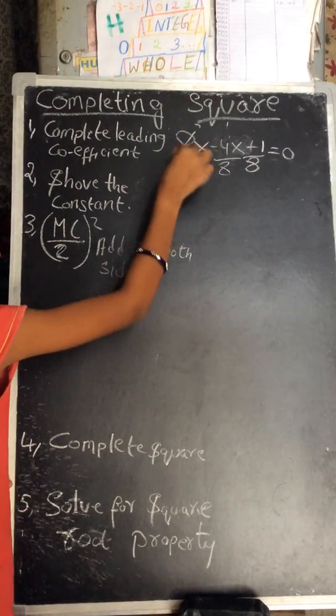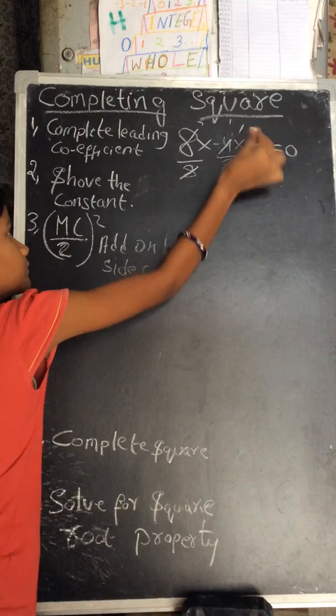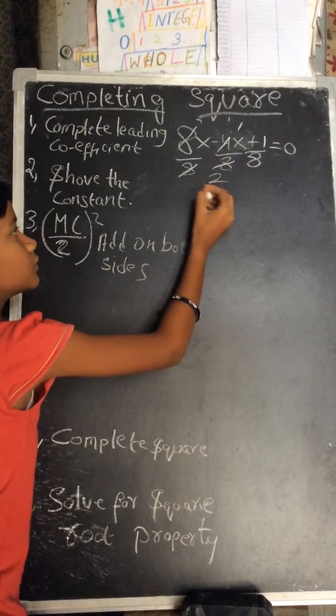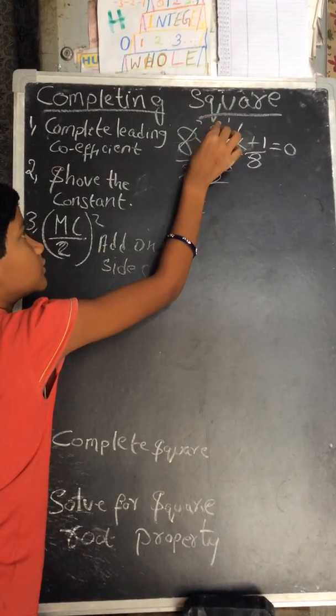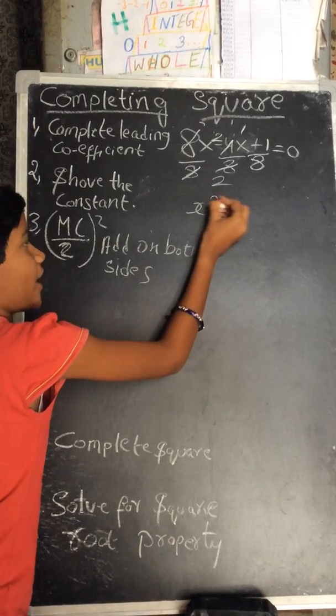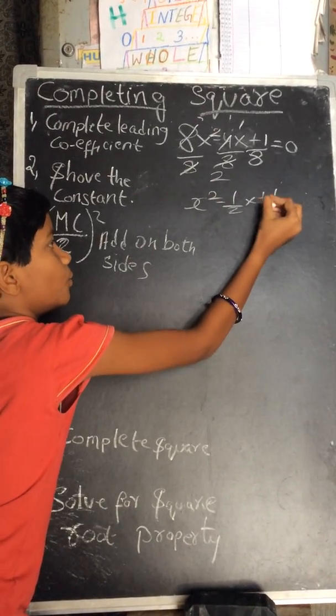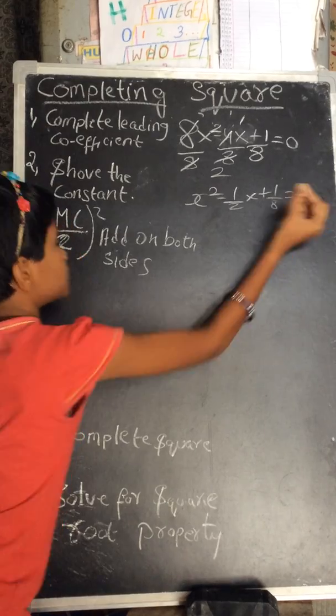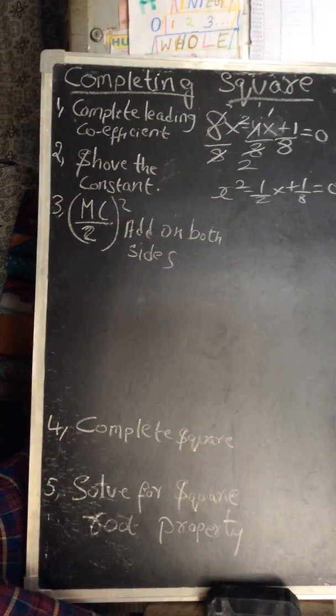8 and 8 gets cancelled, giving us x squared minus 1 by 2x plus 1 by 8 equals 0. Now isolate the constant.